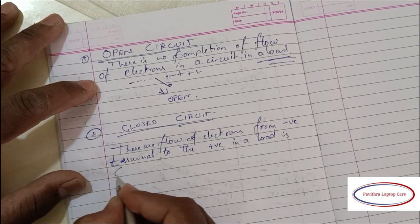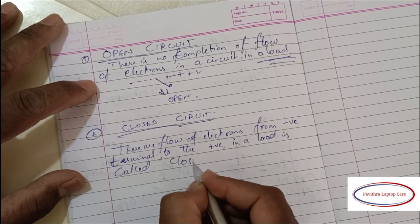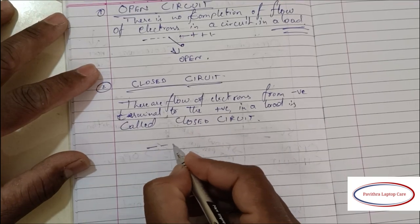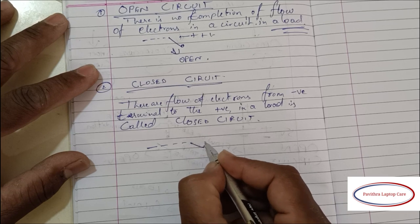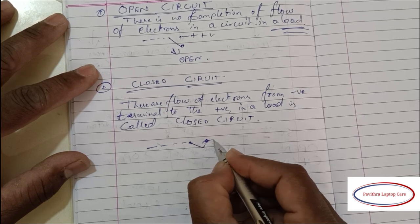In closed circuit, there will be a flow of electrons from negative terminal to the positive terminal. In this condition, the switch will be closed.